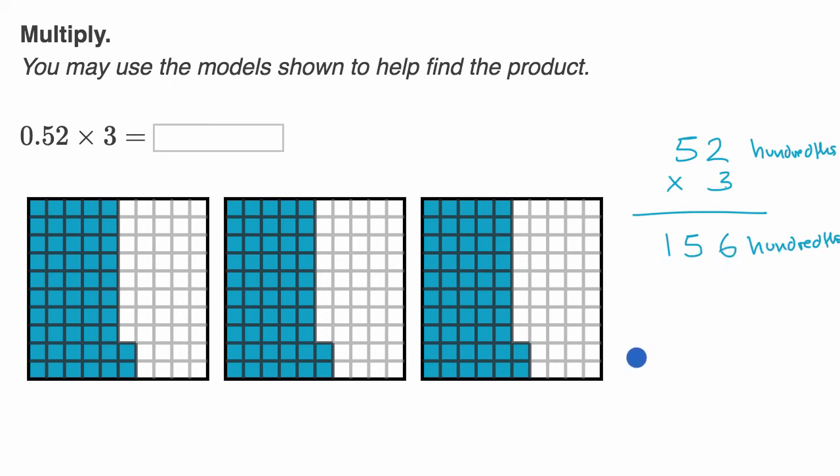And how do we represent 156 hundredths? Well, there's a couple of ways to think about it. If this is the ones place, this is the tenths place, this is the hundredths place, well we would write the six there, the five there, and the one there. So you could recognize this as, hey look, a hundred hundredths is the same thing as a whole.